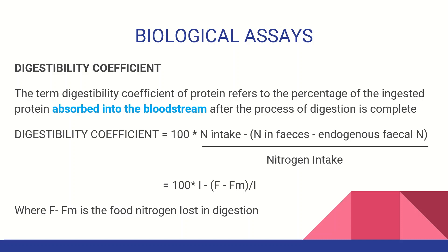In short form: intake — that is, protein intake minus F minus Fm, divided by I (intake). F minus Fm represents fecal nitrogen lost in digestion. That is the Digestibility Coefficient formula.